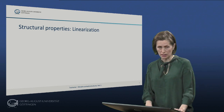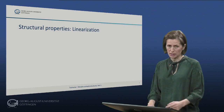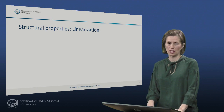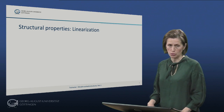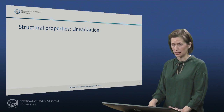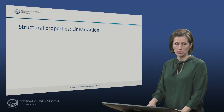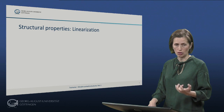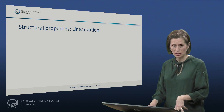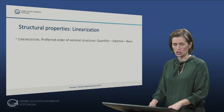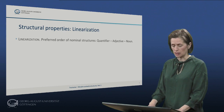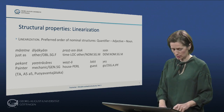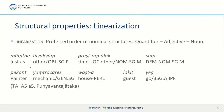So first we will begin by looking at nominal structure, starting with linearization. In principle, the word or constituent order of Tocharian is free, and this includes also the order of words in phrases. In particular, in metric texts there is a large amount of variation. However, it is possible to establish a fixed or canonical word order. If we begin with phrases, we have an order which is quantifier, adjective, and noun, as seen in this example here.